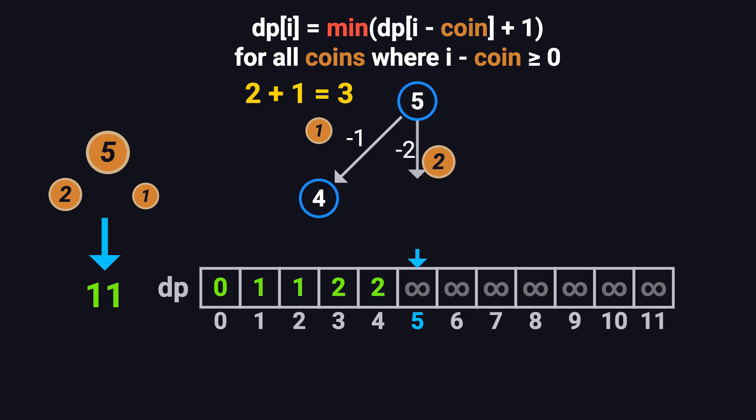Try using a 2 coin. 5 minus 2 equals 3. dp[3] is 2. Again, 2 plus 1 equals 3. Try using a 5 coin. 5 minus 5 equals 0. dp[0] is 0. So 0 plus 1 equals 1 coin total. The minimum of 3, 3, and 1 is 1. So dp[5] equals 1.